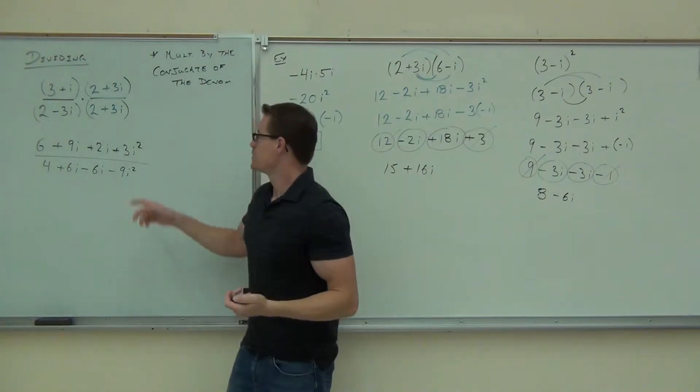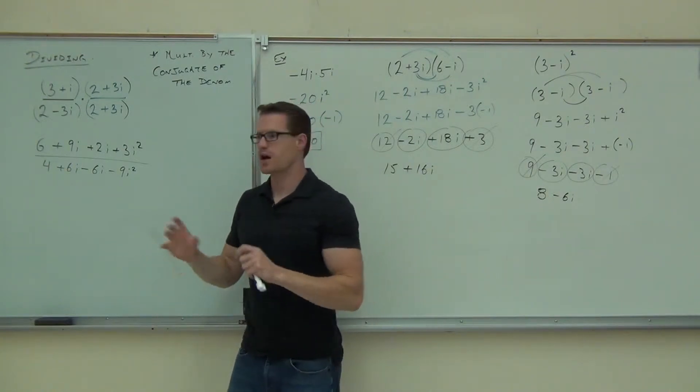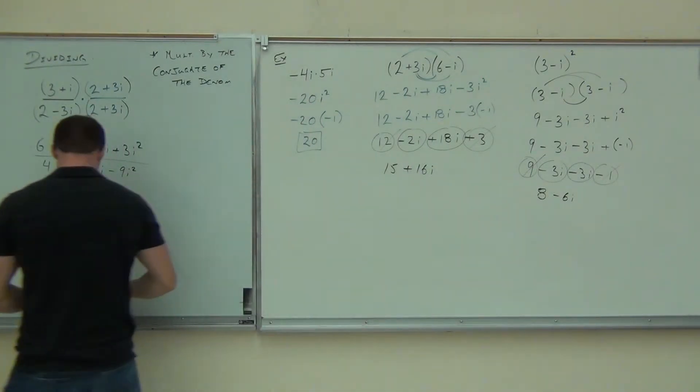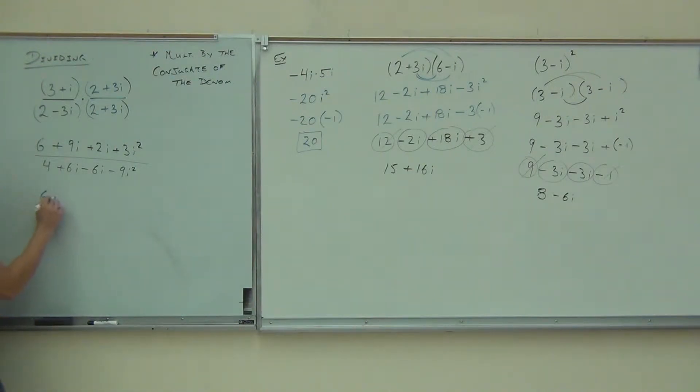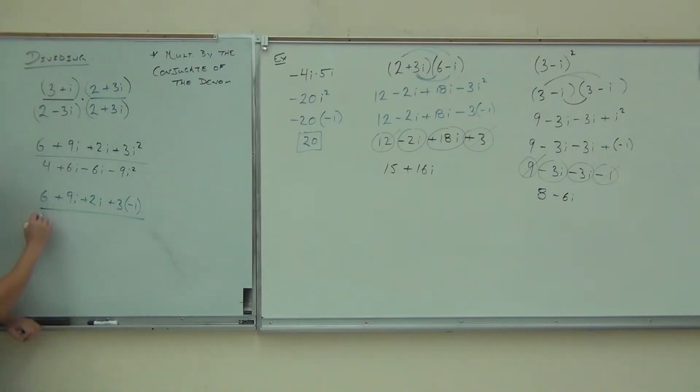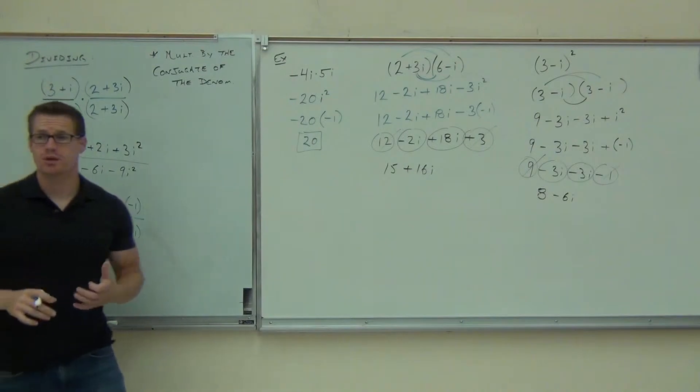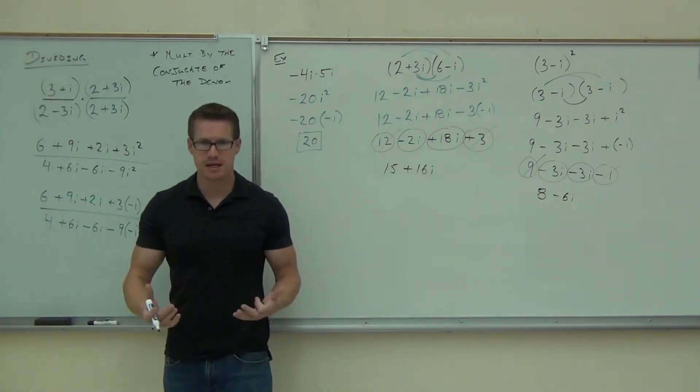It'd be a shame if you guys knew how to do this and got this far and then messed the i's up and got different signs or forgot about the i squared and got different signs. So we're going to do 6 plus 9i plus 2i plus 3. What's the i squared again? Negative 1. We're going to have 4 plus 6i minus 6i minus 9 times the i squared is negative 1. Go slowly. Think through it. The toughest part about this is the negatives.